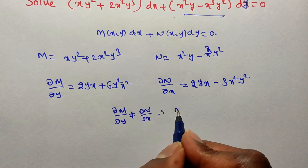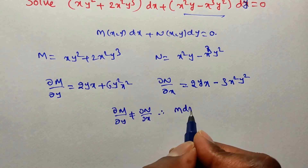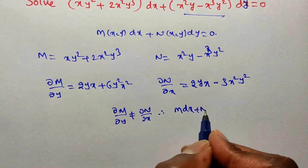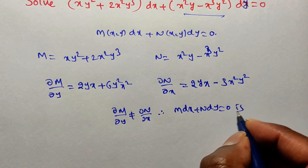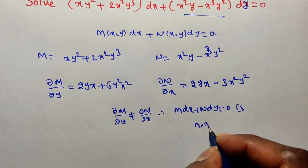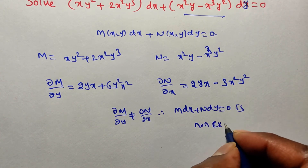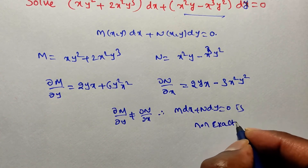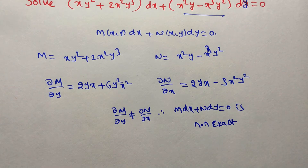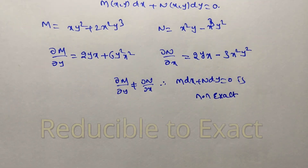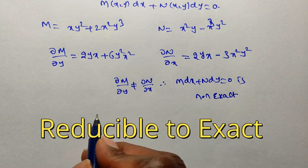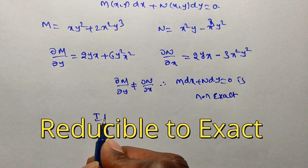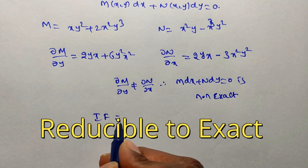Therefore the given differential equation Mdx + Ndy = 0 is non-exact. Since it is non-exact, we have to convert it into an exact equation by multiplying an integrating factor.